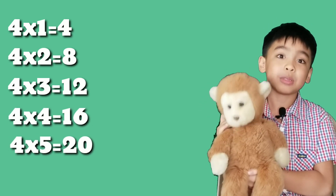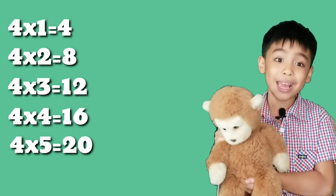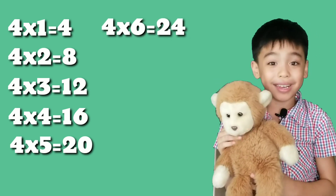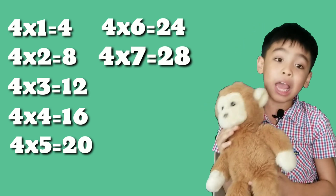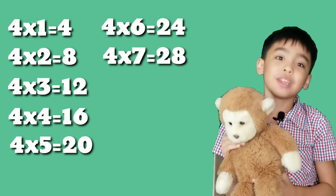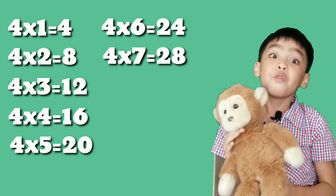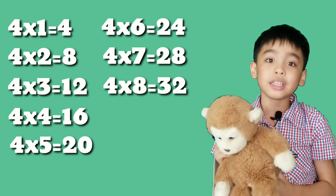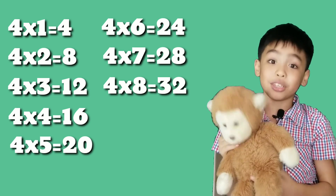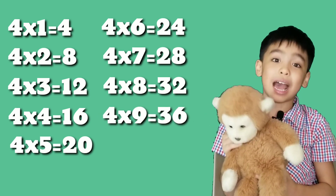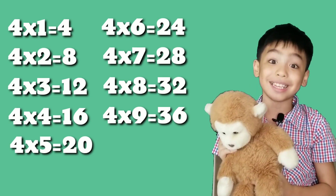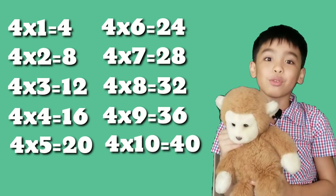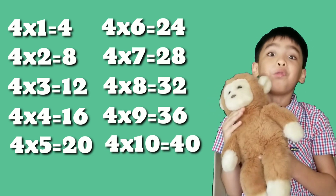4 times 5 equals 20. 4 times 6 equals 24. 4 times 7 equals 28. 4 times 8 equals 32. 4 times 9 equals 36. 4 times 10 equals 40.